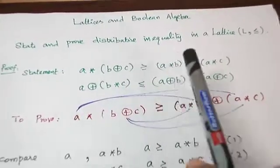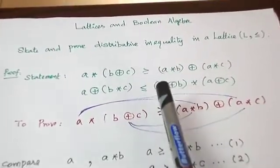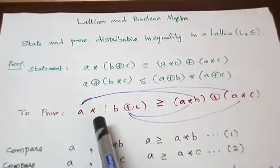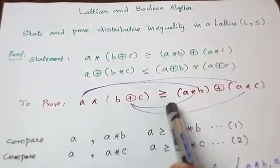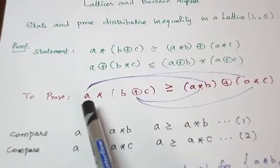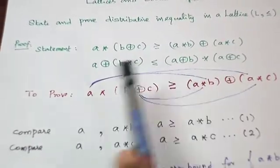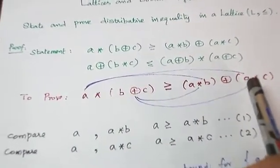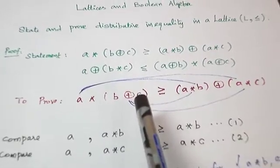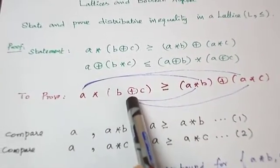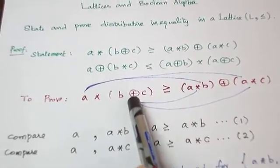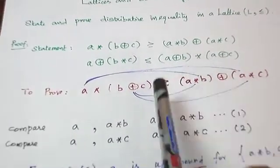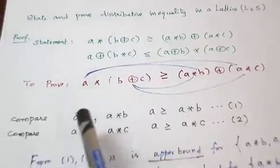But in general, equality cannot hold — only inequalities can hold. Now, the technique we will use: compare A with A★B and A with A★C, then derive a result. Similarly, compare B+C with A★B and B+C with A★C. This is the technique you have to remember.